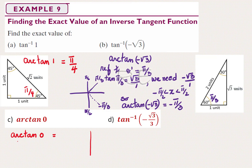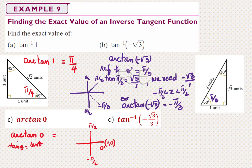Part C calls for the arc whose tangent is 0, between negative π/2 and π/2. Tangent is sine over cosine, and sine equals 0 at 0 while cosine equals 1. Therefore, the arc whose tangent is 0 is 0 degrees.